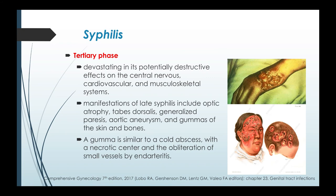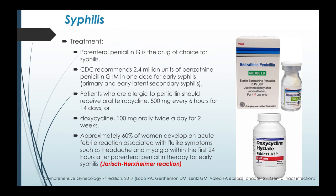The drug of choice for syphilis treatment is parenteral penicillin G. The CDC recommends 2.4 million units of benzathine penicillin G IM in one dose for early syphilis. Patients who are allergic to penicillin should receive oral tetracycline 500 milligrams every six hours for 14 days, or doxycycline 100 milligrams orally twice a day for two weeks. Approximately 60 percent of women with syphilis may develop an acute febrile reaction with flu-like symptoms such as headache and myalgia within the first 24 hours after parenteral penicillin therapy for early syphilis — this is called the Jarisch-Herxheimer reaction.